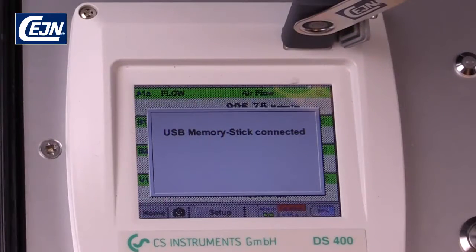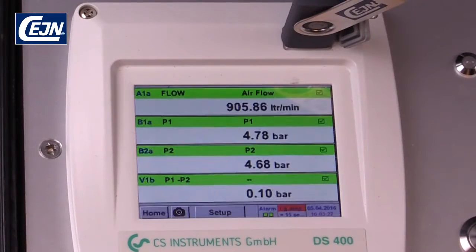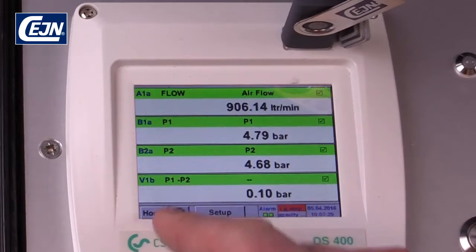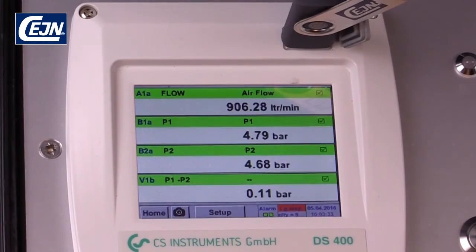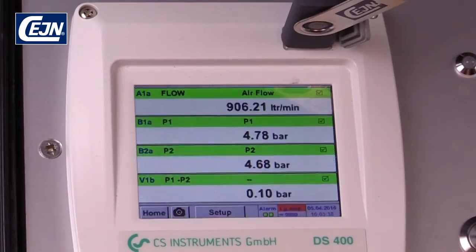To make a report, you can connect a USB memory stick and take a screenshot from the controller. Simply touch the camera icon and save the screenshot to the USB. Always make two pictures to be 100% sure that you have it.